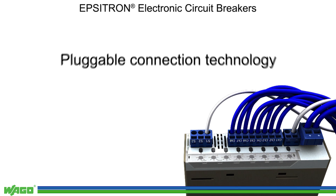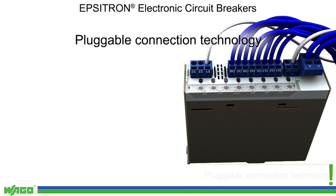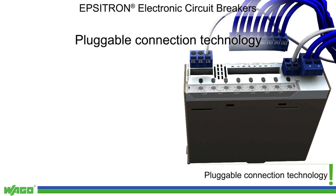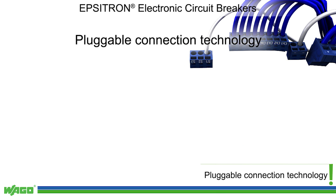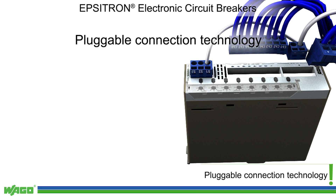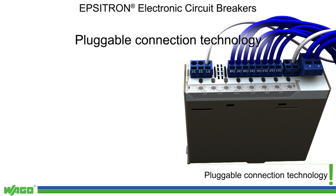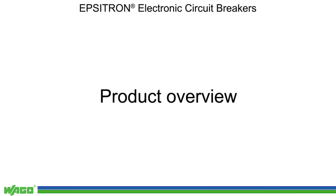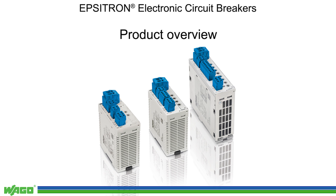Plugable connection technology allows wiring and maintenance work to be performed quickly and easily. WAGO's 787 series ECBs are available with two, four, or eight channels.